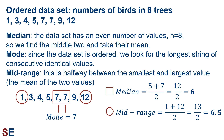For the mid-range, this is halfway between the smallest and largest value — the mean of those two values. Since we have these ordered, we can look on the far left: the 1 is the smallest; on the far right, the 12 is the largest. 1 plus 12 divided by 2 is 6.5. So our median is 6, our mode is 7, and our mid-range is 6.5.